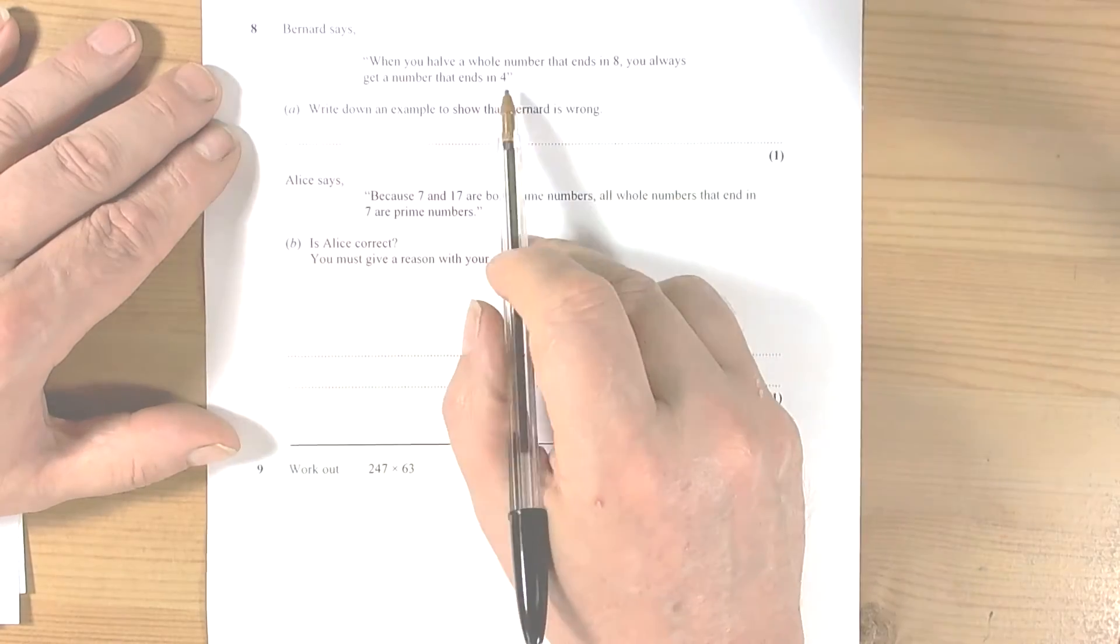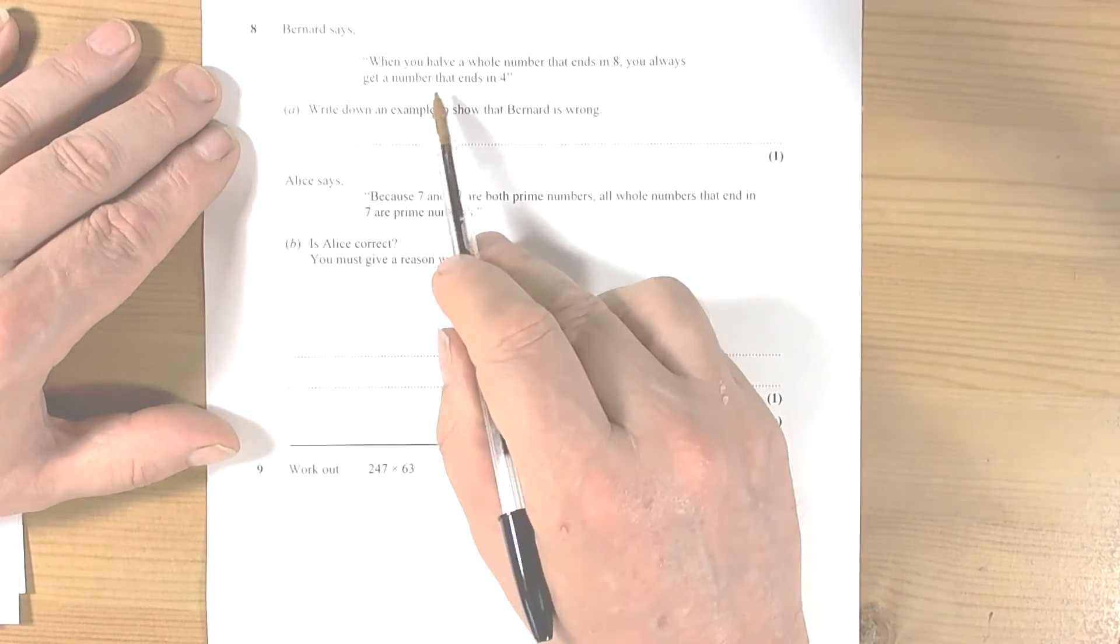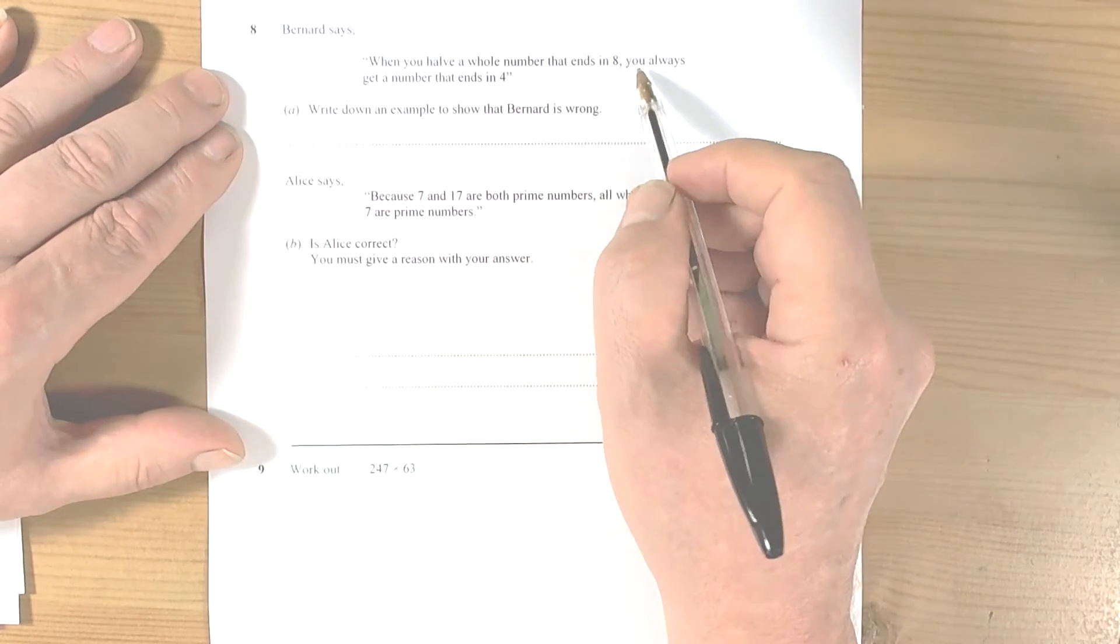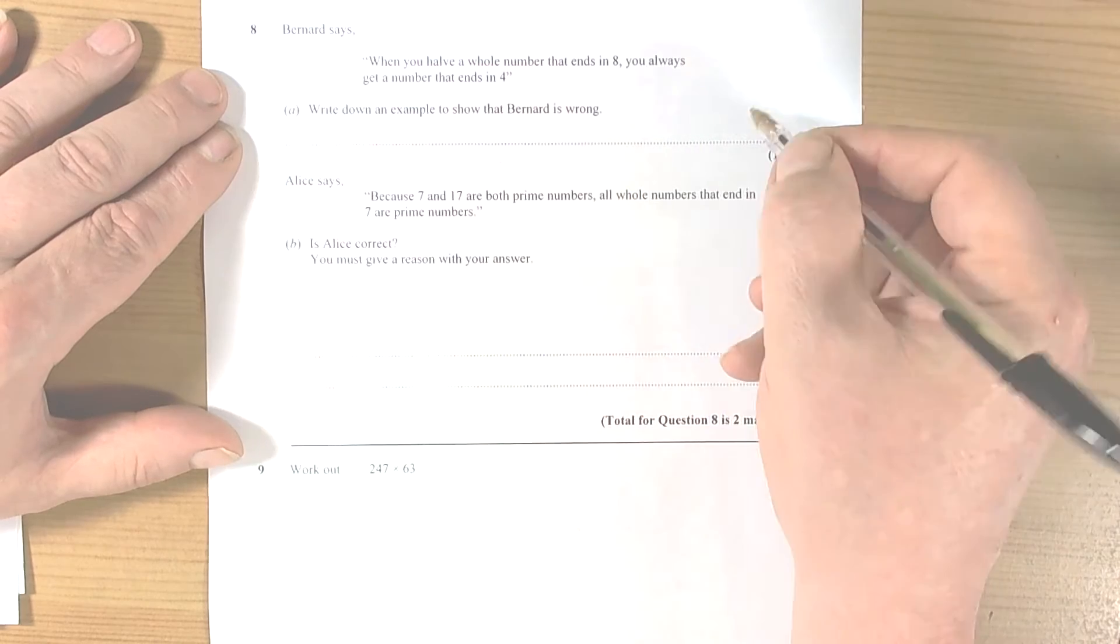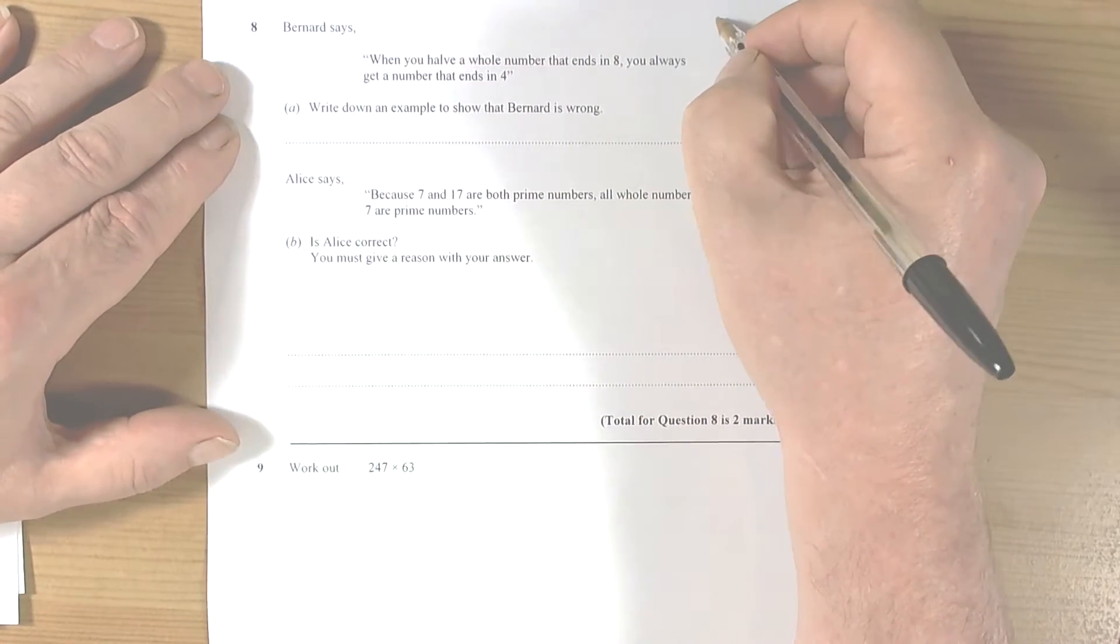Okay, so this question talks about whole numbers that end in eight. When you have a whole number that ends in eight, you always get a number that ends in four. Okay, so let's write down a few numbers that end in eight.